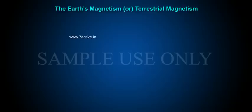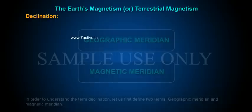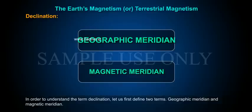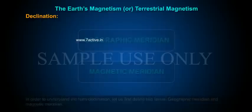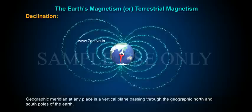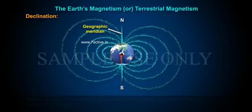Declination: In order to understand the term declination, let us first define two terms: geographic meridian and magnetic meridian. Geographic meridian at any place is a vertical plane passing through the geographic north and south poles of the Earth.